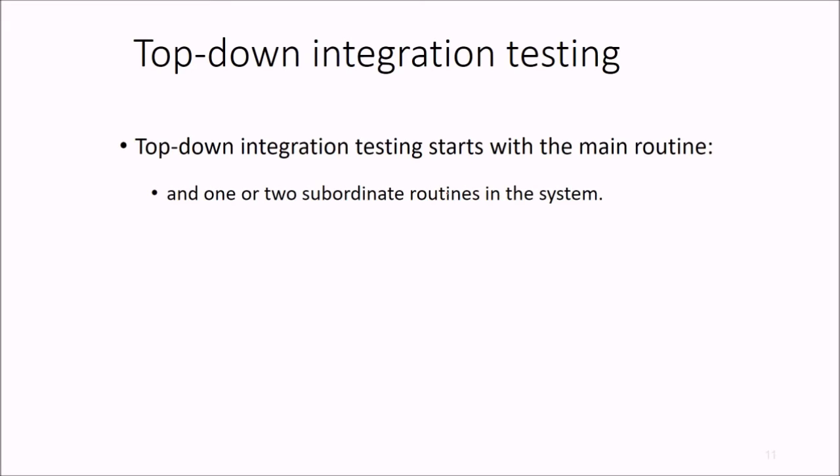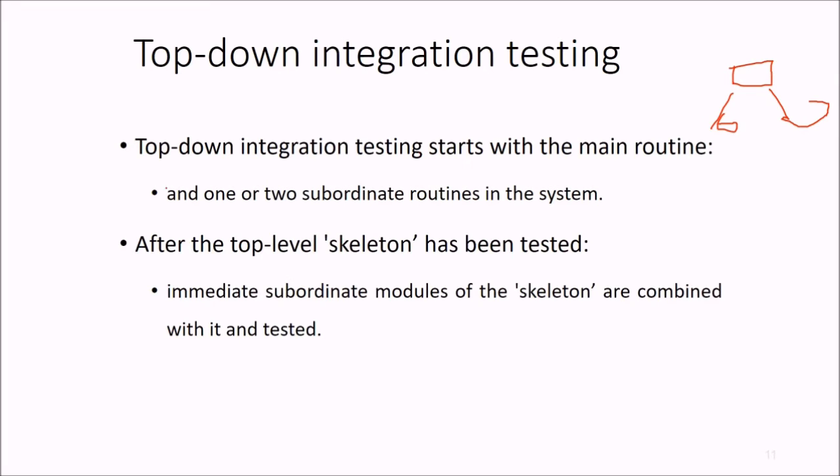If we follow top-down integration testing it starts with the main routine, means the managerial level module, the root level module, and then one or two subroutines in the system are combined. After this top level skeleton has been tested, then the immediate subordinate modules which are coming from the above main modules are combined again and then they are tested.